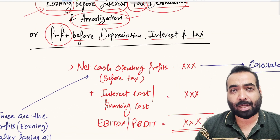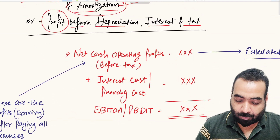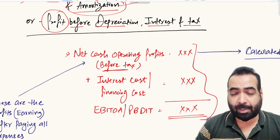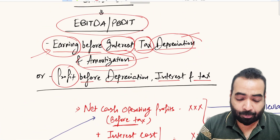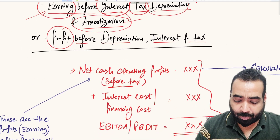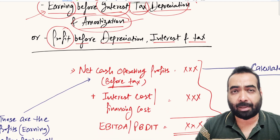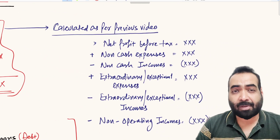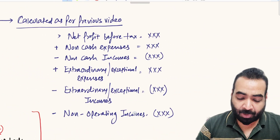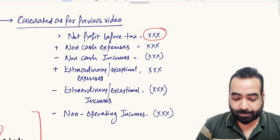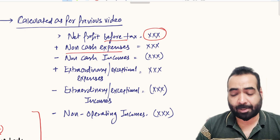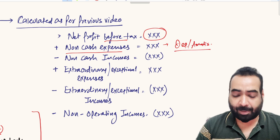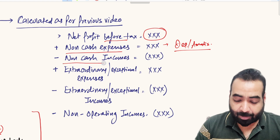So how do we calculate EBITDA? This is the basic formula: you take net cash operating profit before tax — it must be taken before tax since we are calculating earnings before tax. The formula for net cash operating profit: you take net profit before tax, then add back all non-cash expenses, so your depreciation and amortization are covered under this head automatically.